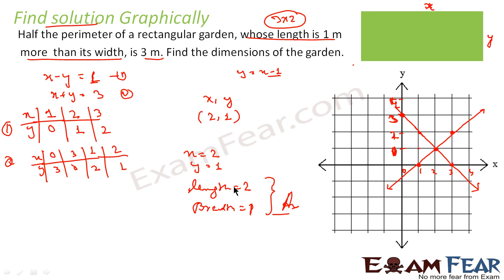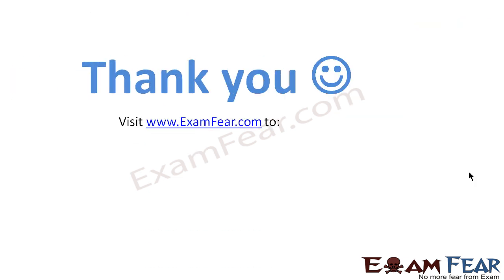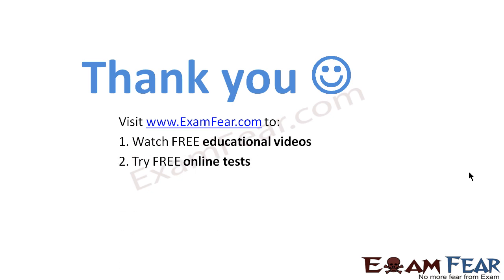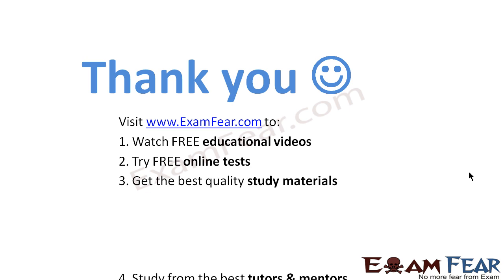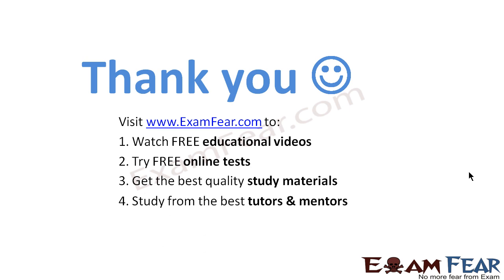So what I have done here: I assumed length is x and breadth is y. Then I found equations x − y = 1 and x + y = 3 from the given data. We plotted the graph and found that the two lines meet at the point (2, 1). Visit examfear.com to watch free educational videos, try free online tests, get the best quality study materials, and study from the best tutors and mentors. Thanks once again.